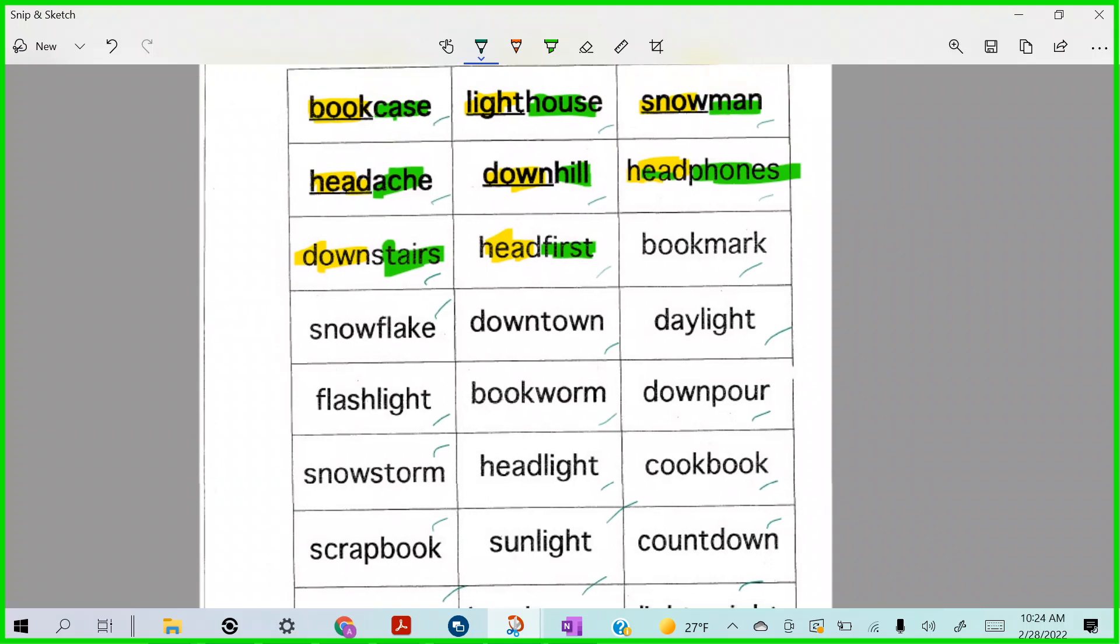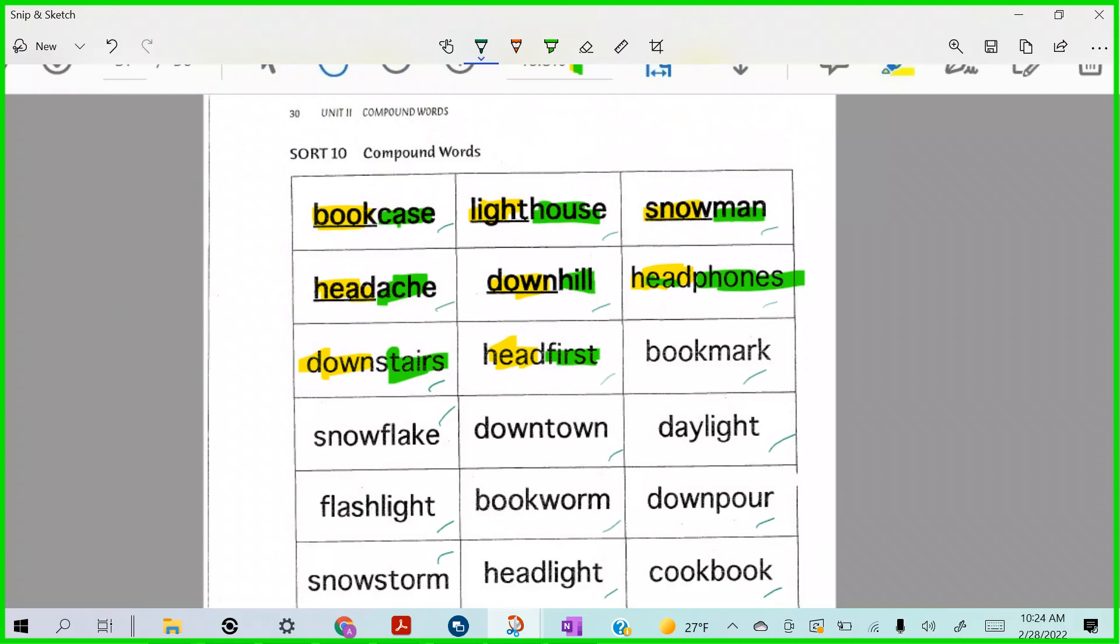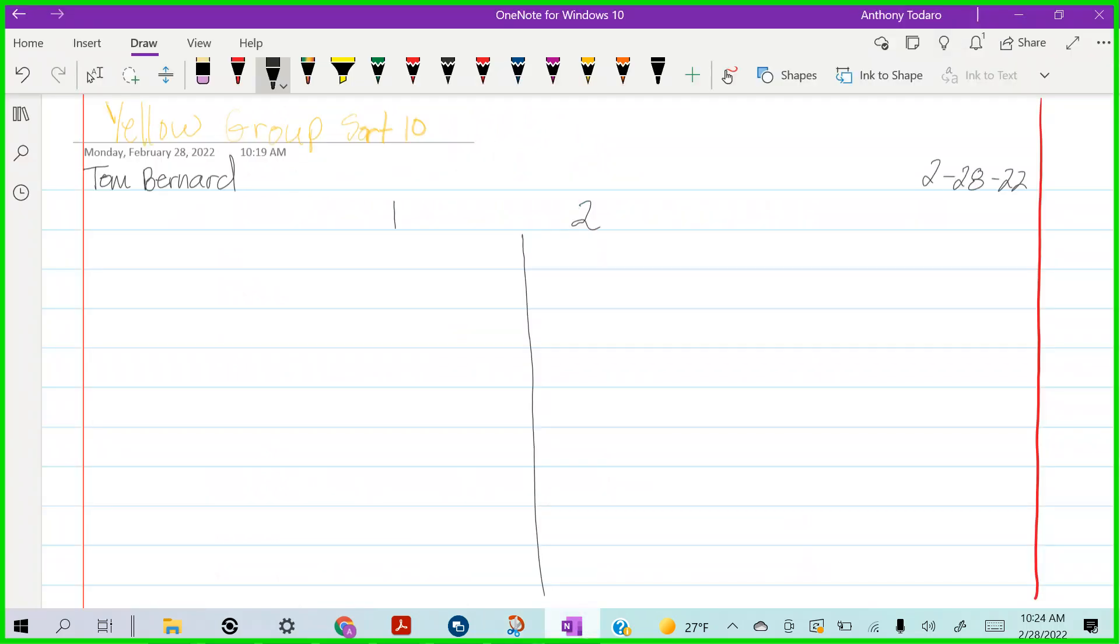What you're gonna do is on your page, like I said, you'll pick two colors and identify the two words that make up the new compound word. Right. Now when you're done with that, you'll come over to your page.